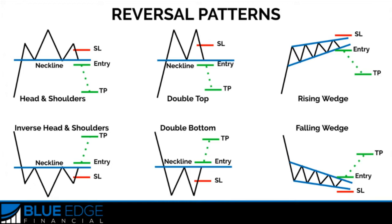So don't worry about drawing these out or anything like that. The first category is the reversal chart patterns. In all the chart patterns here, there was a trend followed by one of these patterns, and then the market reversed or went against that trend after the pattern. So if one of these patterns forms during an uptrend, the pattern tells us the price will start to head down. And if one of these patterns forms during a downtrend, the pattern tells us the price will start to head up. These are the six reversal patterns.